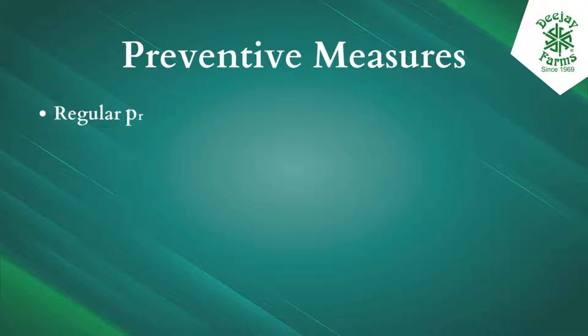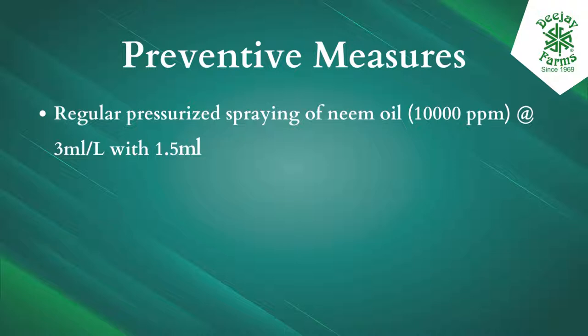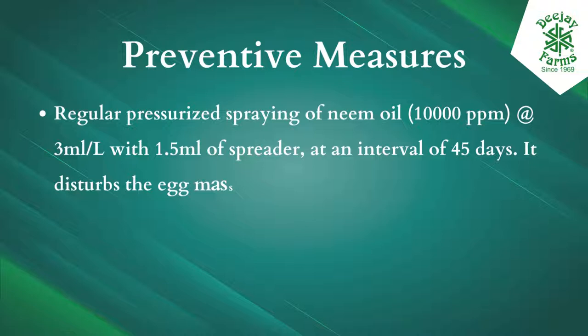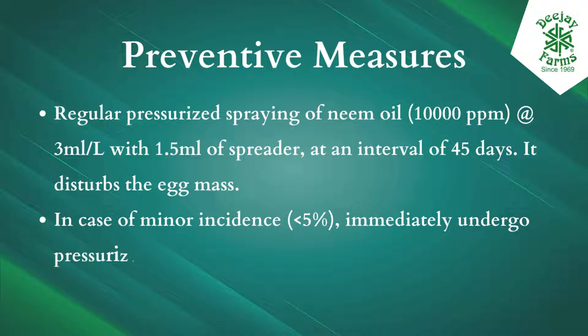Preventive measures: regular pressurized spraying of neem oil 10,000 ppm at 3 ml/L with 1.5 ml of spreader at an interval of 45 days. This disturbs the egg mass. In case of minor incidents, immediately undergo pressurized salt water spray.